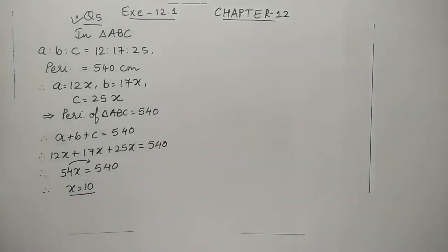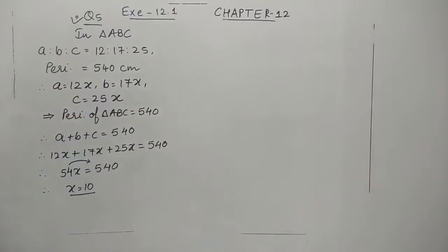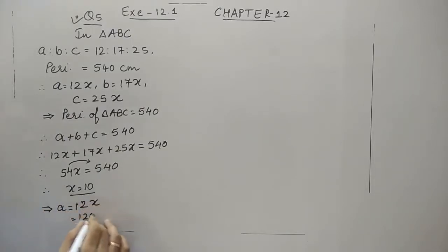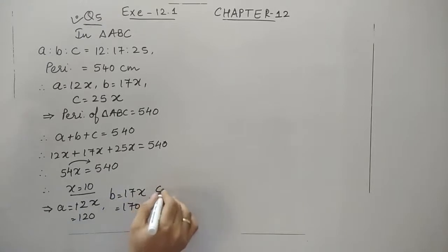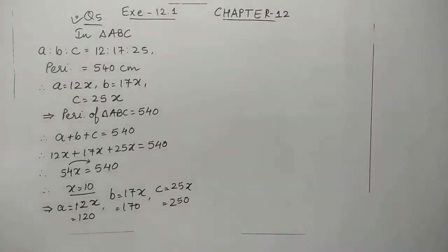Let us now find all the values of A, B, and C by substituting x equals 10 into each side. A is 12 times 10 equals 120. B is 17 times 10 equals 170. And C is 25 times 10 equals 250. Now we have the lengths of all 3 sides.